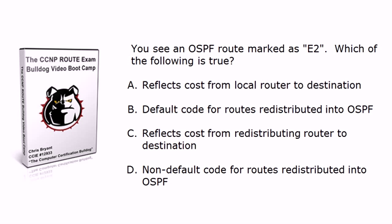Question one: You see an OSPF route marked as E2. Which of these four facts is true? Does it reflect the cost from the local router to the destination? Is it the default code for routes redistributed into OSPF? Does it reflect the cost from the redistributing router to the destination? Or is it non-default for routes redistributed into OSPF?